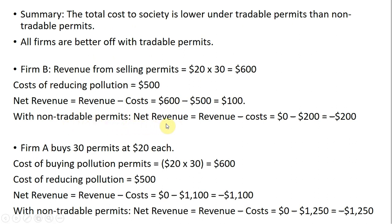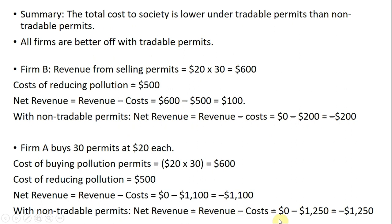With non-tradable permits, Firm B had no permit revenue but incurred costs of $200 for reducing pollution — so it was down $200 versus being up $100 with tradable permits. Firm A is also better off: it buys 30 permits at $20 each for a cost of $600, and still had to reduce 20 units of pollution at a cost of $500, giving a net of negative $1,100. That's better than under the non-tradable system. So both firms are made better off with tradable permits.